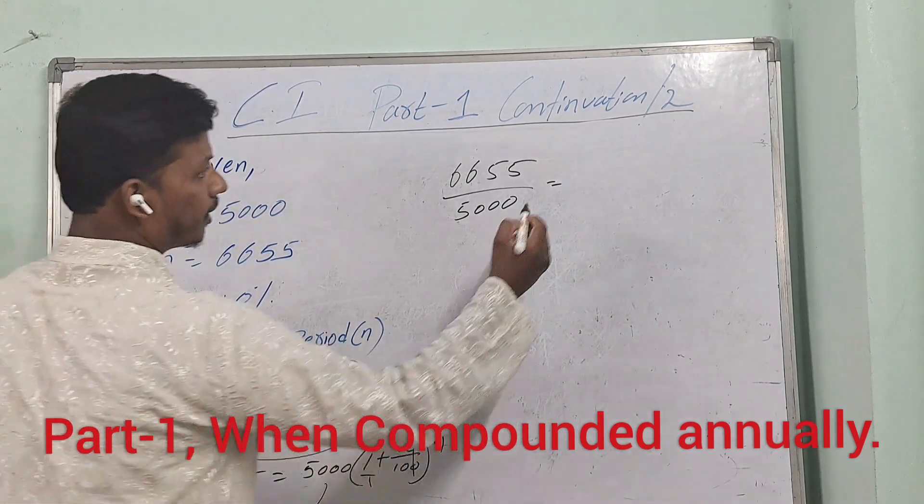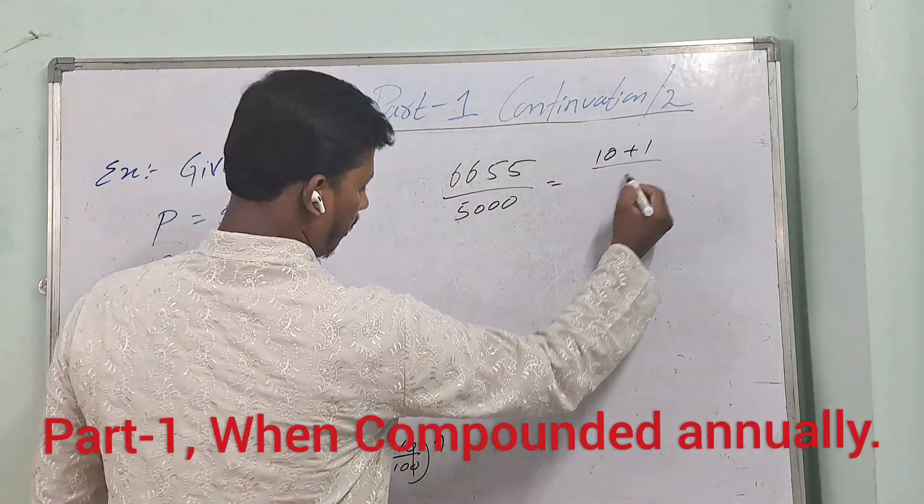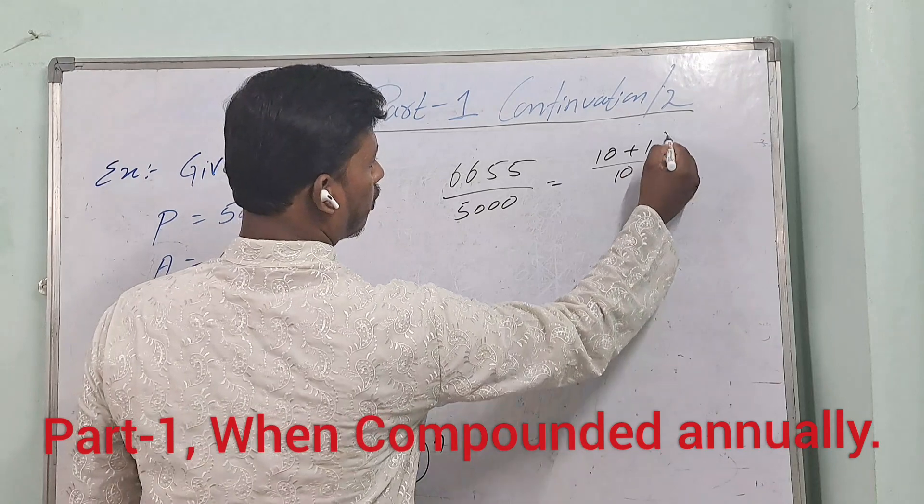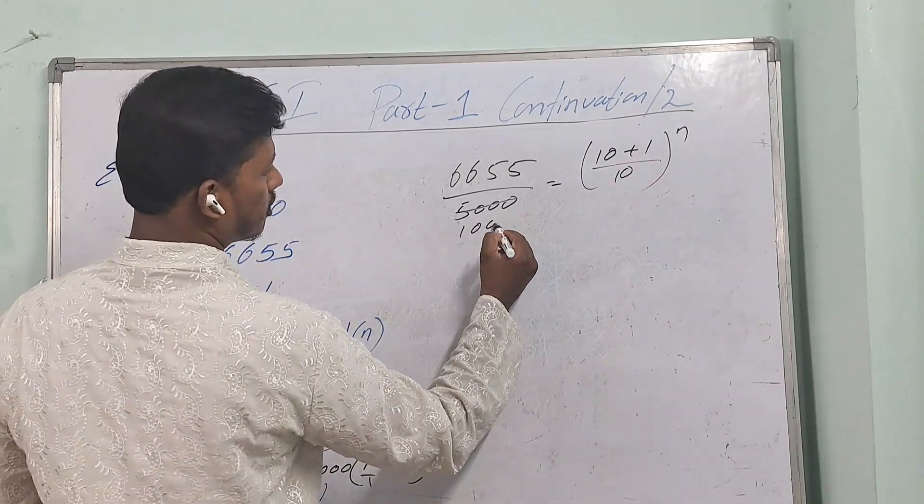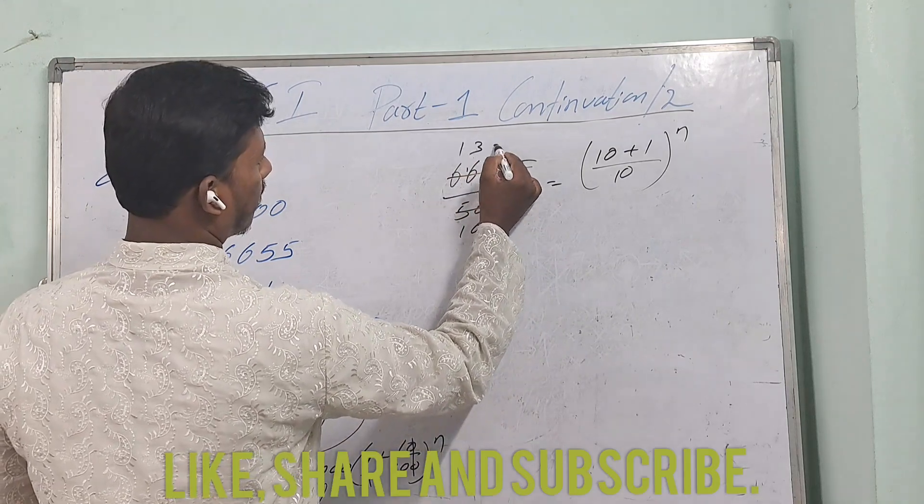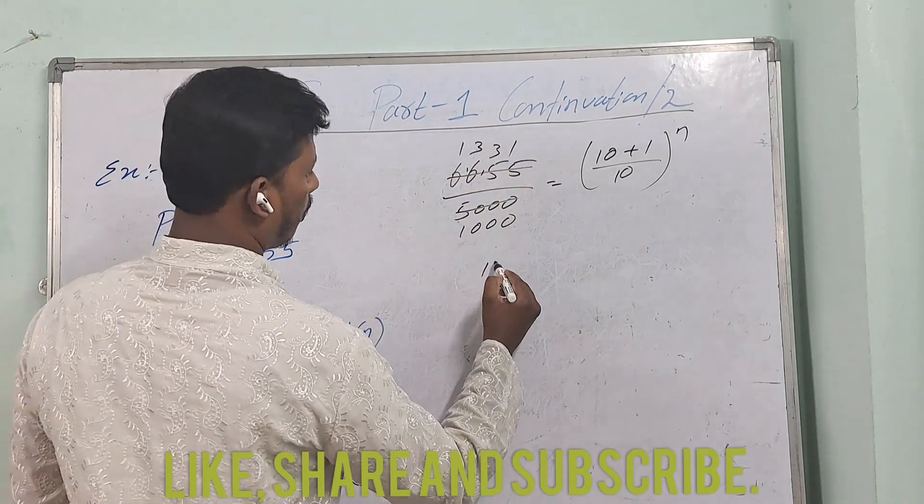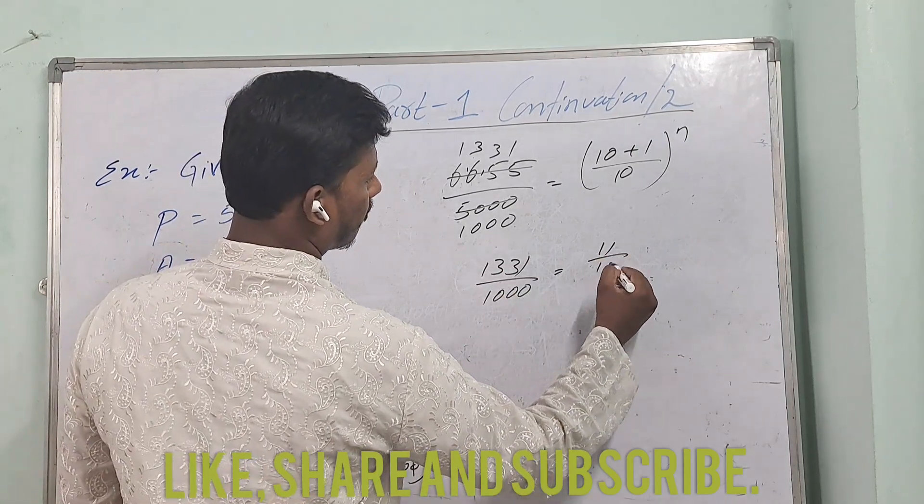Now cancellation: 6655 divided by 5000. Doing the division: 1331 divided by 1000 is equal to 10 plus 1, 11 by 10 whole to the power of n.